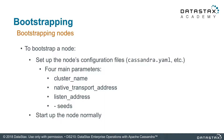Bootstrapping a node is pretty simple. What you're doing is changing the cassandra.yaml file on the node you're going to add to the system. In there, you point out the seed nodes — running nodes inside the running cluster — and give it the cluster name. Those are the most basic things. The yaml file stores things like cluster name, native transport address, listen address, and seeds. Those are all mandatory for getting the node going.